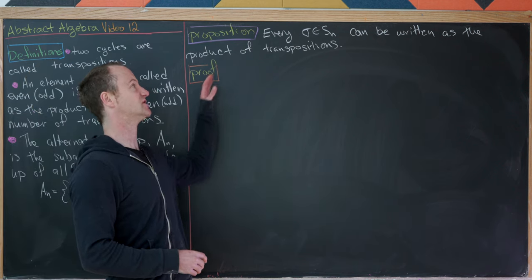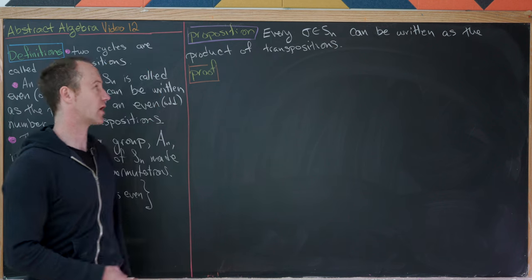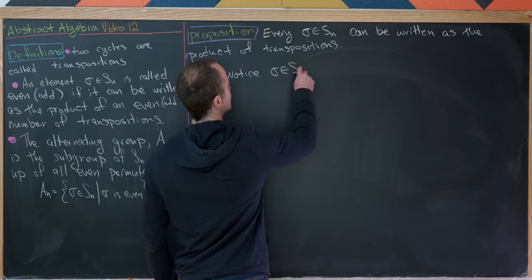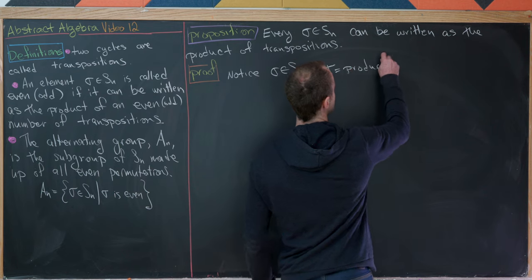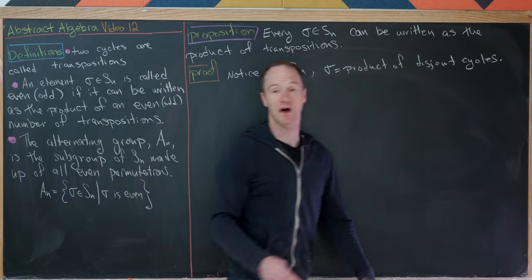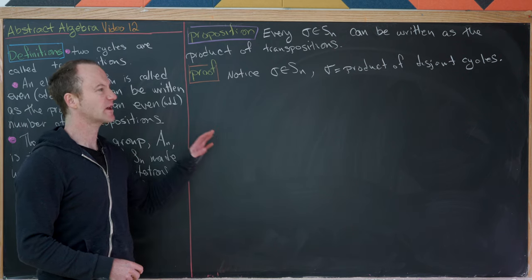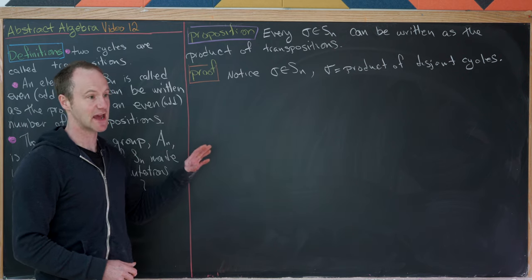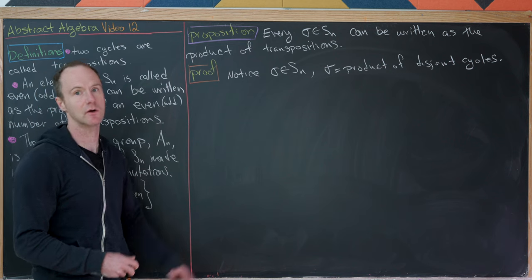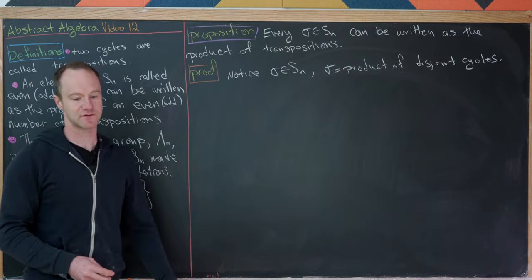Every element of Sn can be written as the product of transpositions. We can take sigma in Sn, write sigma as a product of disjoint cycles, and then all we have to do is take an M-cycle and write it as a product of transpositions. We would apply that result to each of the disjoint cycles making up sigma, giving us a long list of transpositions.